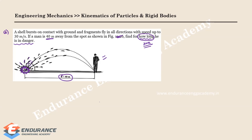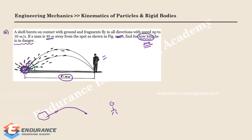Not all fragments will reach him. For example, some fragment coming at a low angle like 10 degrees might travel and fall short of where the person is standing. But at some particular angle, the fragment may travel and reach the person. At that angle and beyond, some fragments will hit him.